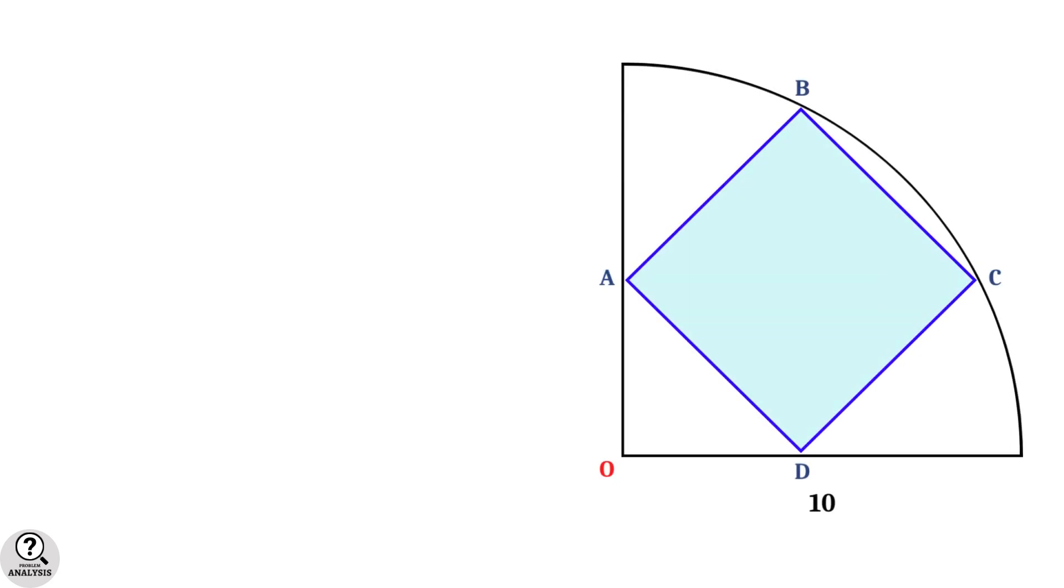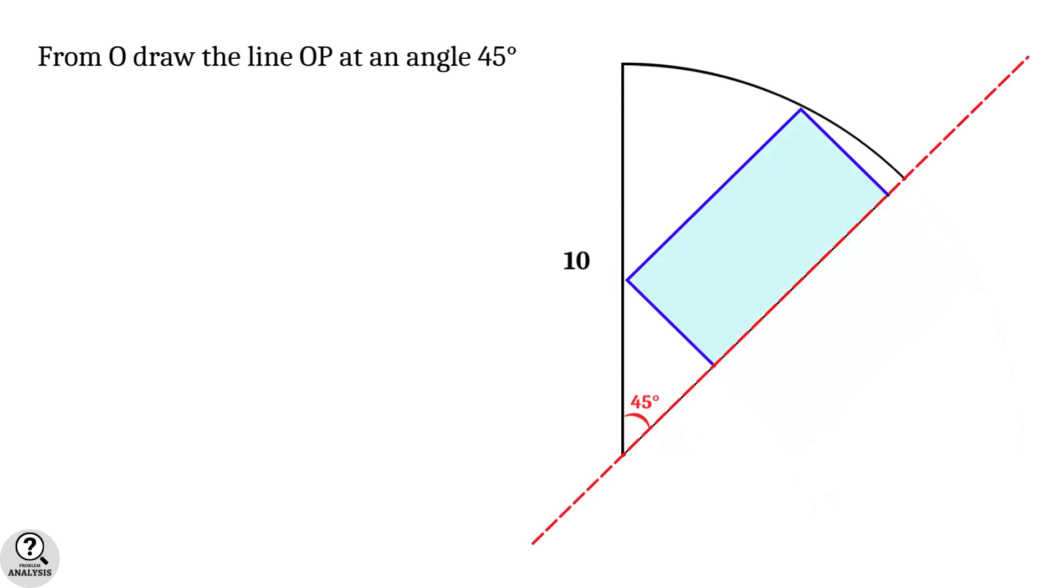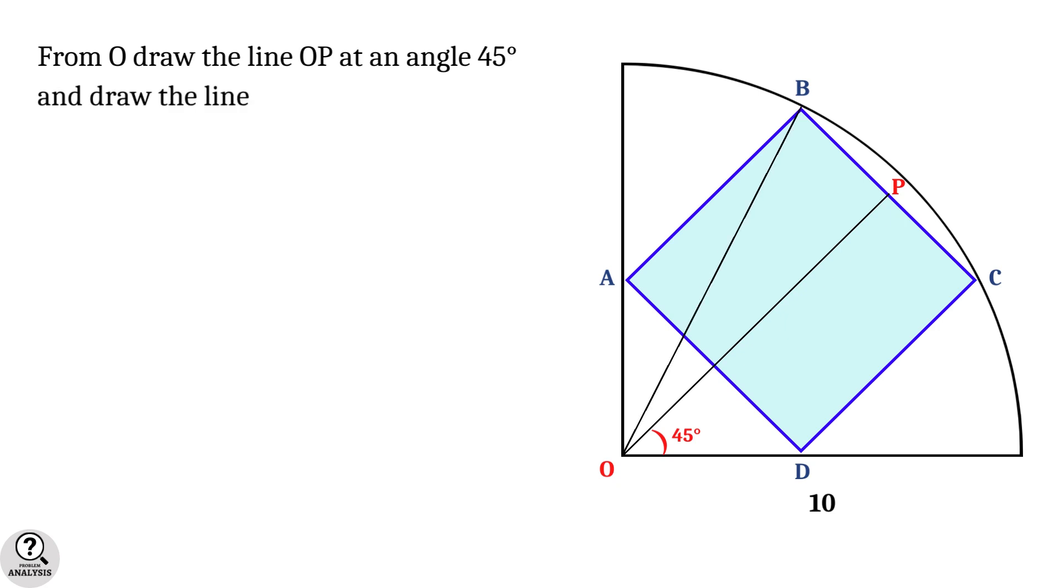Coming back to the figure, from vertex O, draw the line OP at an angle of 45 degrees. The whole figure is symmetric with respect to this line. Also draw the line OB.